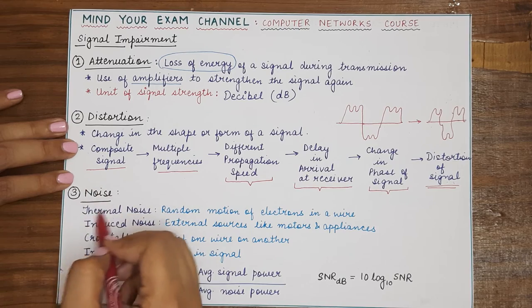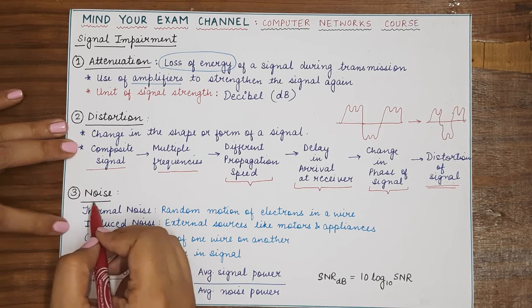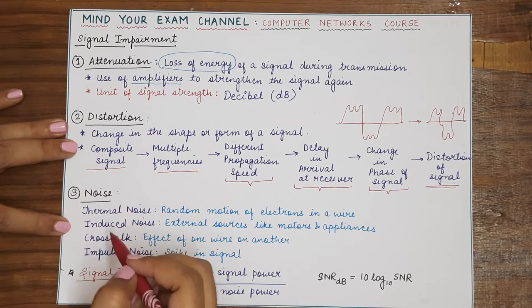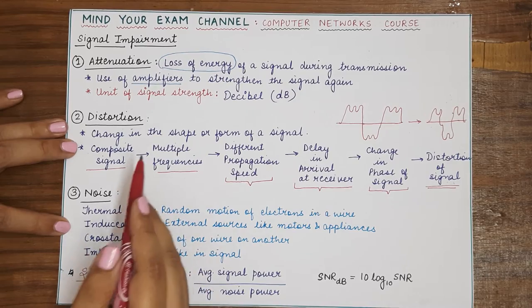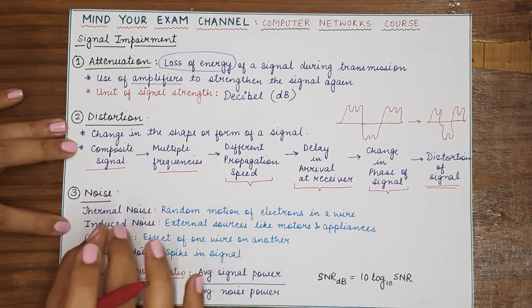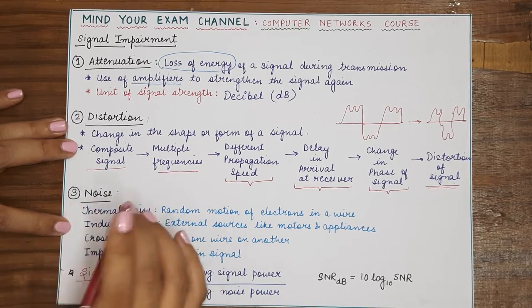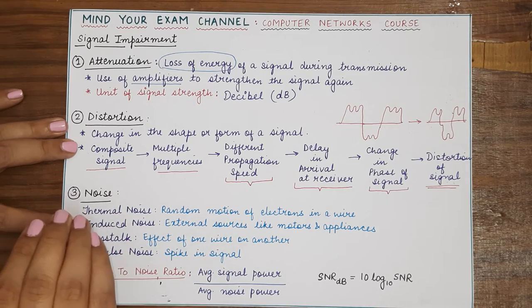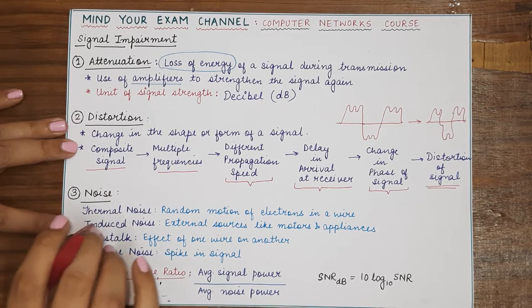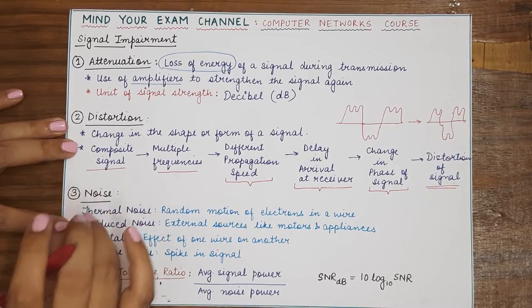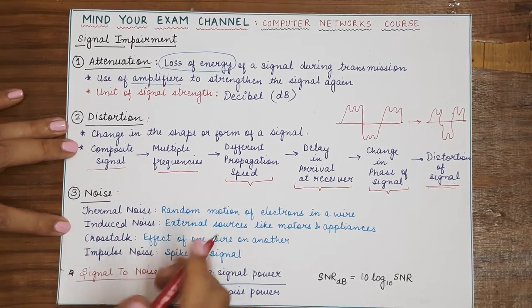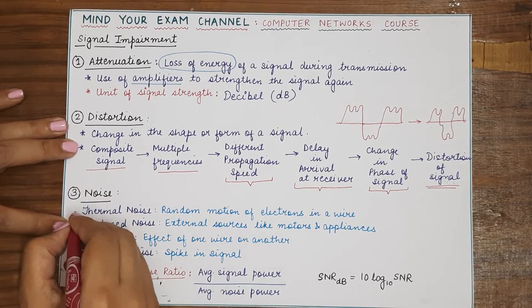Now, coming to the third kind of signal impairment which is noise. Noise can be of different forms. Noise is basically any external source that is inducing or that is incorporating an external frequency into the original signal.